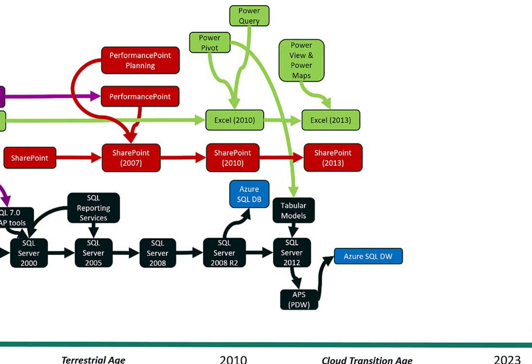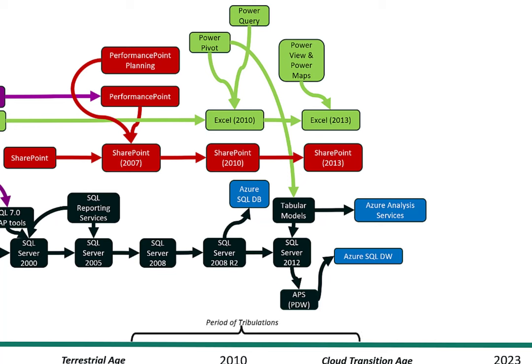That PowerPivot database was eventually migrated into SQL Server 2012 and became what we now know as a tabular model. That database worked so well for Excel users and they determined it would scale well in the cloud and had a better long-term future than traditional OLAP cubes. A few years later, those tabular models became a PaaS service in Azure called Azure Analysis Services. At the bottom of the diagram, I've labeled this the 'period of tribulations' — there were effectively multiple different product lines being integrated, some made it, some didn't, and the strategic direction wasn't always certain.